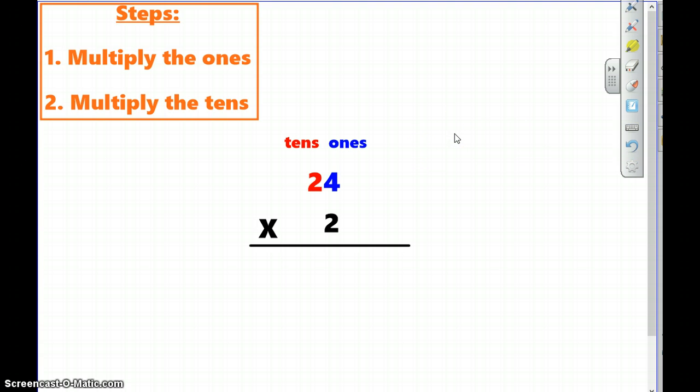Alright. So pretty easy steps we're going to start with. Two steps. Number one, multiply the ones. When I say the ones, I mean the ones place. Step two, multiply the tens, the tens place. Okay? Pretty easy, right? Only two steps.